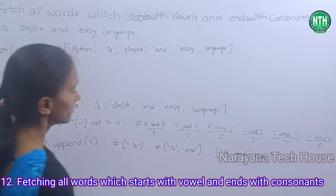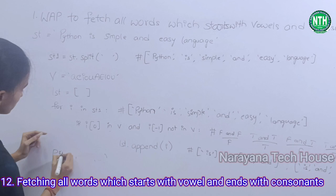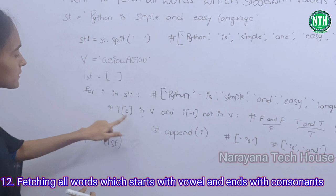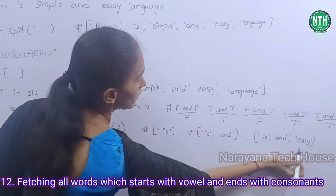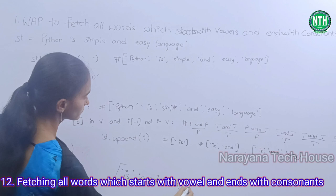After all appending, the for loop is over. Outside the for loop, the print function is there — print(lst). The last list is displaying: 'is', 'and', and 'easy'. In the given string, these three words start with vowels and end with consonants. Thank you.